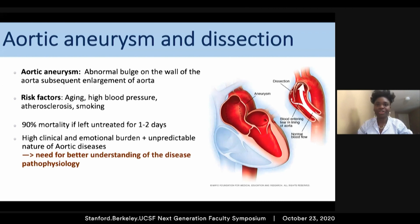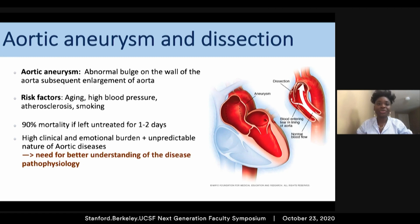Aortic aneurysm is a formation of a sac or balloon in a segment of the aorta. This can lead to aortic dissection when a tear occurs in the wall of the aorta. There are three common locations for aortic aneurysm: in the ascending part of the aorta, in the thorax, and in the abdomen. Aneurysm risk factors are not well understood; however, aging, high blood pressure, and atherosclerosis are the most recognized risk factors.